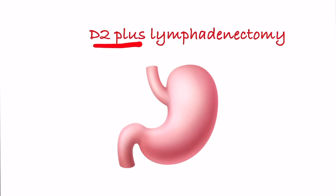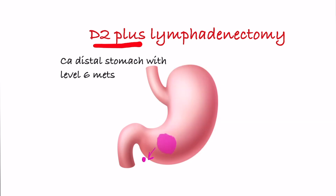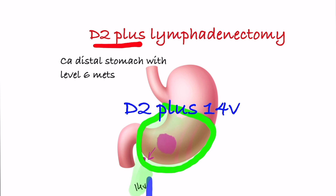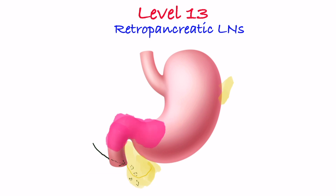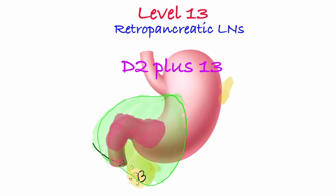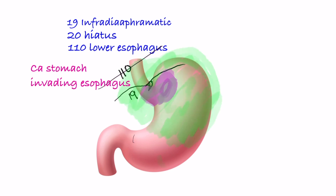D2 plus lymphadenectomy is gastrectomy with extended lymphadenectomy beyond D2. For cancer of the proximal stomach invading the greater curvature, splenic hilum node level 10 is nearby and is removed along with D2 — called D2 plus 10. For cancer of the distal stomach with metastasis to level 6 lymph nodes, node 14v (superior mesenteric node) is nearby and is removed — called D2 plus 14v. Level 13 node is the posterior pancreatic head node, considered metastatic for gastric cancer, but is a regional node for duodenal cancer. So if gastric cancer involves the duodenum, it becomes a regional node and is dissected with D2 — called D2 plus 13. Nodes 19 (infradiaphragmatic) and 20 (esophageal hiatus of diaphragm) and 110 (paraesophageal) are removed along with lower esophagectomy when gastric cancer involves the esophagus.